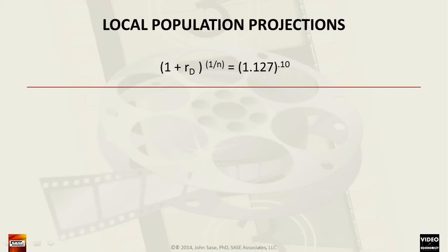Then, we take this sum to the exponential power of 1 over N, where N is the number of years. In the case of 1 decade, N equals 10, and our resulting equation equals 1.127 to the 0.1 power.